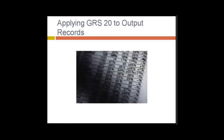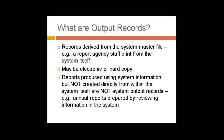The third category that GRS 20 applies to is output records. Output records are records derived from the system master file — for example, a report that agency staff print out from the system itself. They may be electronic or hard copy. Reports produced using system information but not created directly from within the system itself are not system output records — for example, annual reports prepared by analyzing information contained within the system are not necessarily output records. It's really reports that are derived directly from the system master file as a function the system itself provides.